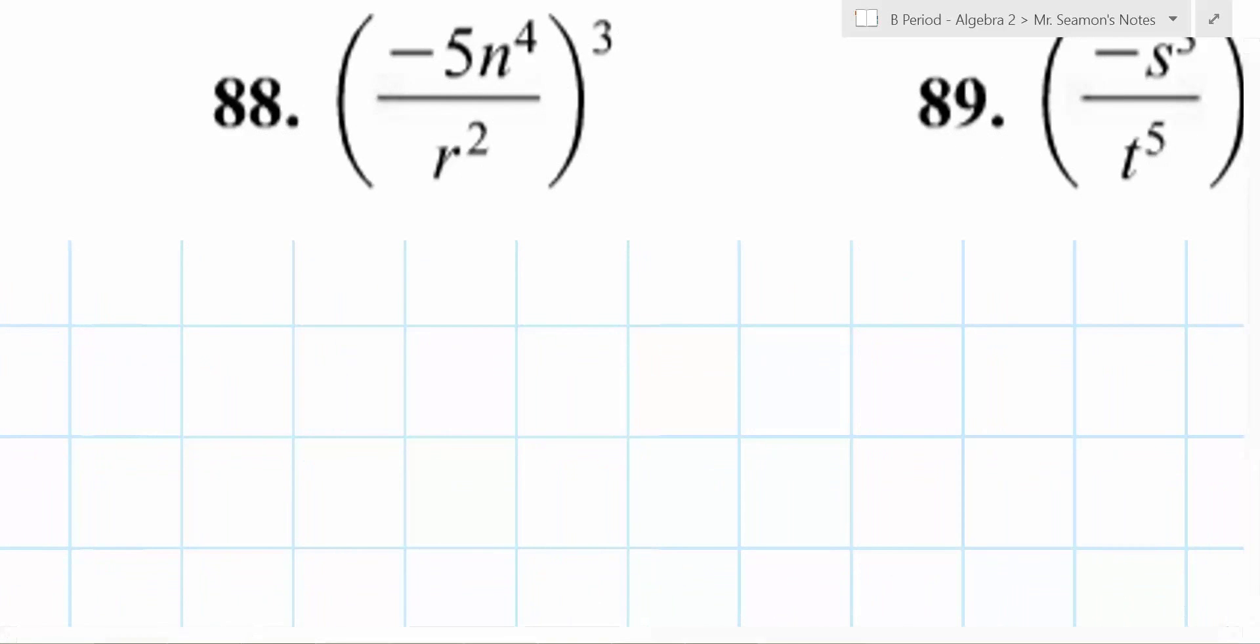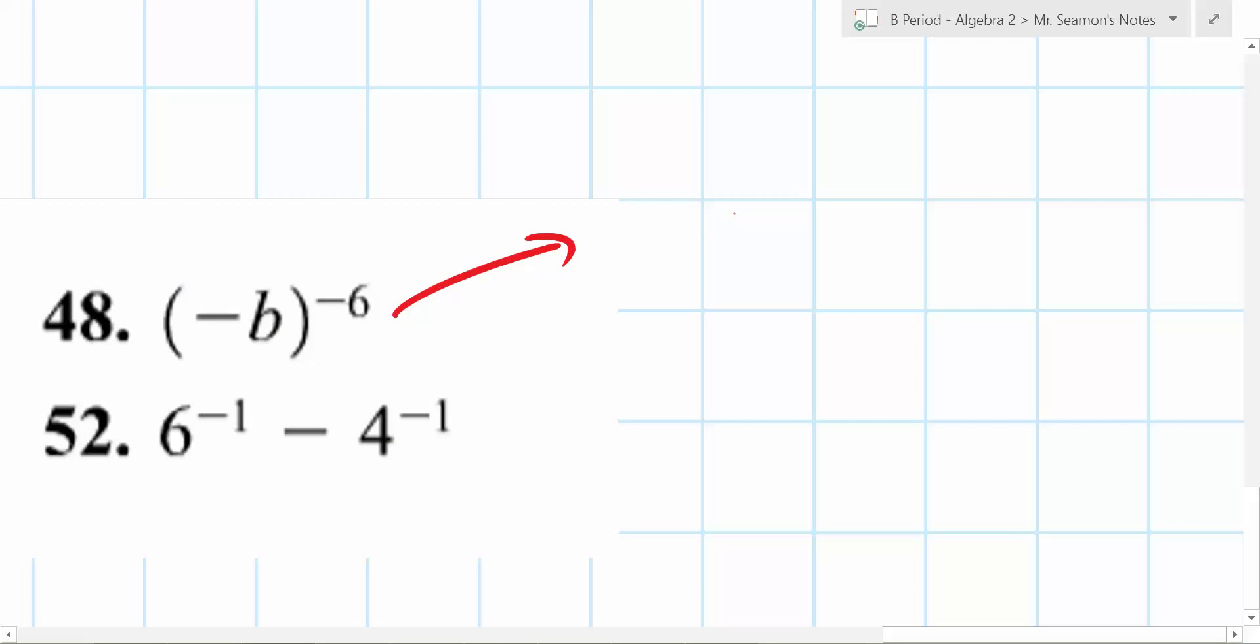What about this one? Same idea. Negative 5 cubed n to the what power? 12. 12 over r to the 6th. Powers of powers you multiply. Yes. I have a question that... You treat it the same. It's going to be negative b to the 6th, but it's going to be right there.